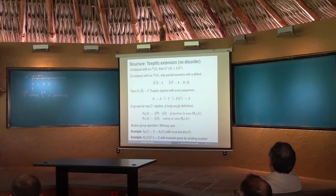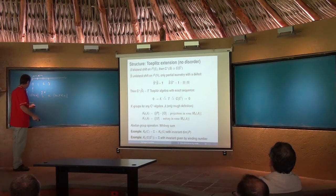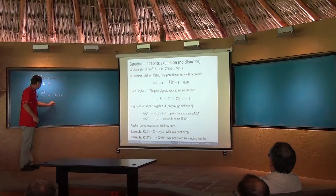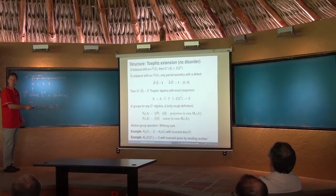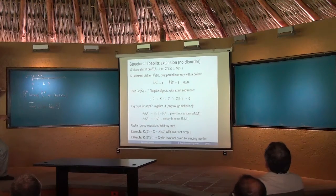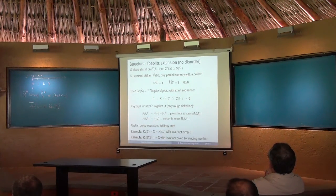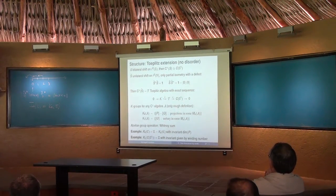Exactness means the image of the inclusion I is precisely equal to the kernel of the projection pi. That is a property that is true. You make it a short exact sequence by including trivial algebras on the left and right. Why is this structure interesting? Because associated to an exact sequence of C*-algebras, you always have an associated interesting sequence of K-theory, which connects the six groups involved.